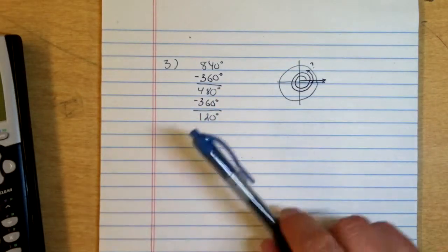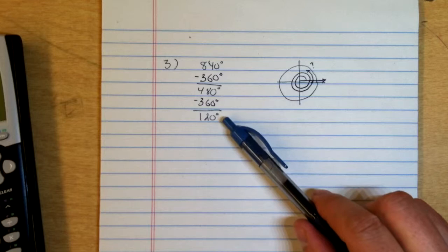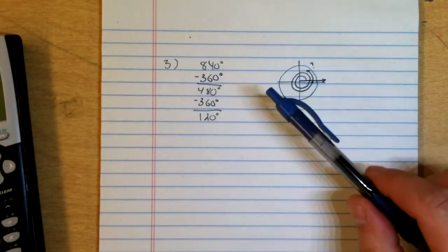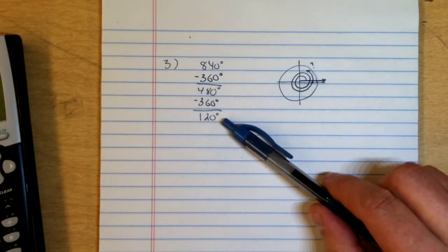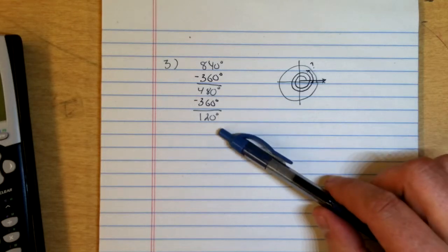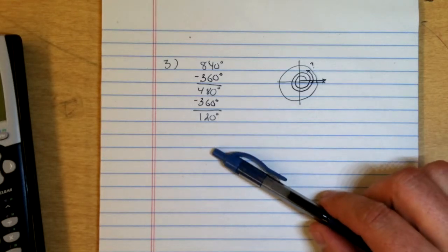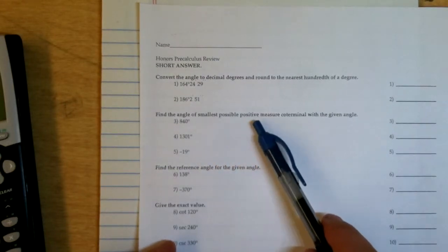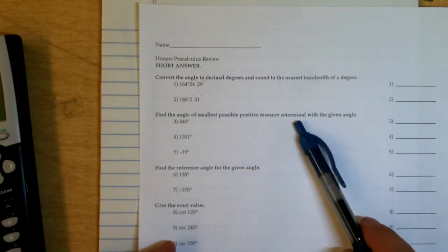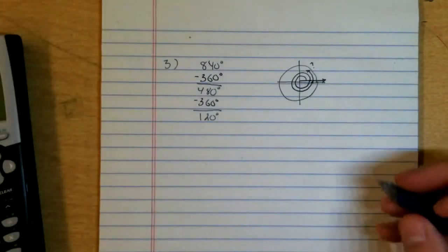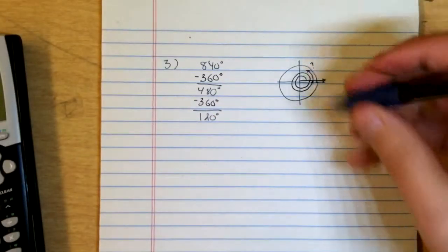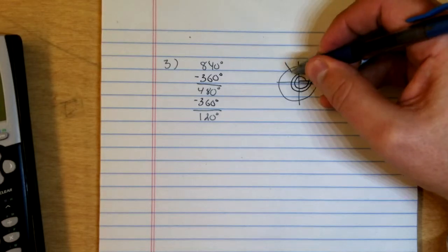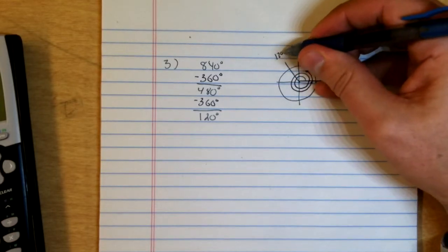Now we have a positive angle that is coterminal with 840, and it's the smallest possible positive one. Because if I were to subtract 360 again, I would get a negative number. So that means the number I found is the smallest possible positive measure that's coterminal with that given angle. So that means that where this angle really is, is 120 degrees. 120 degrees is over here.